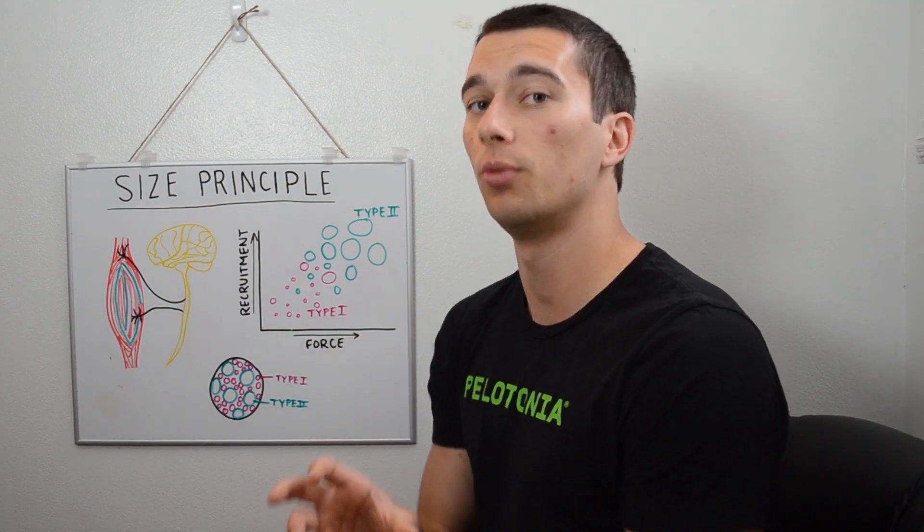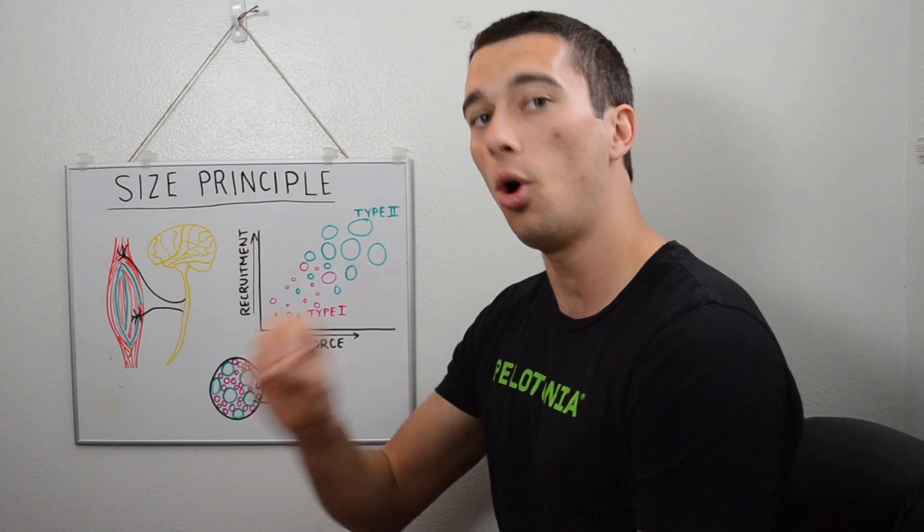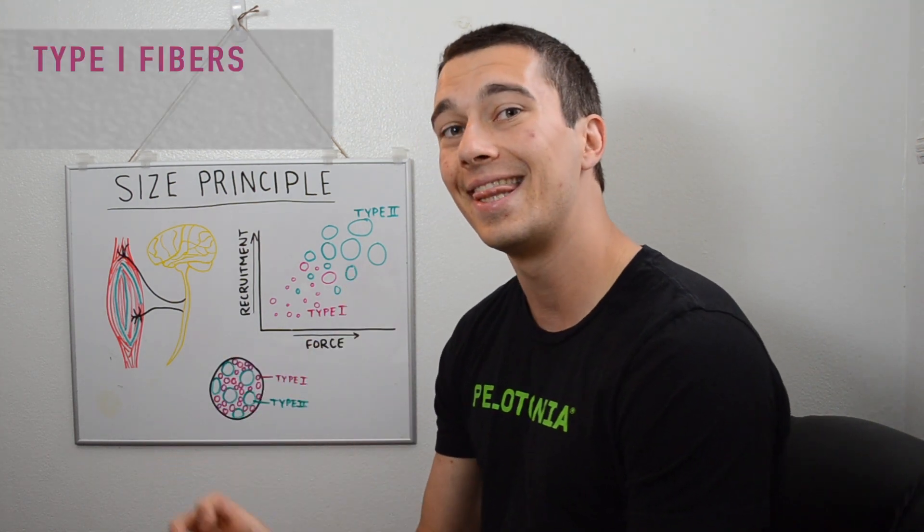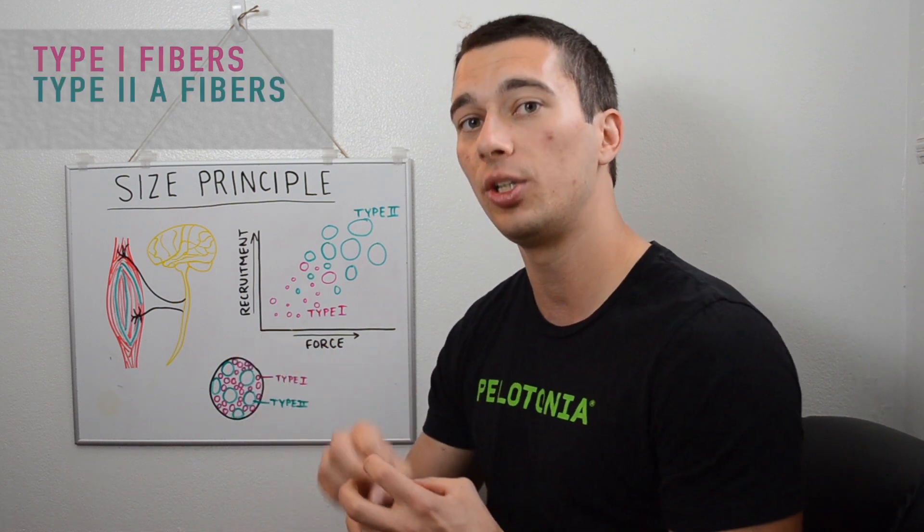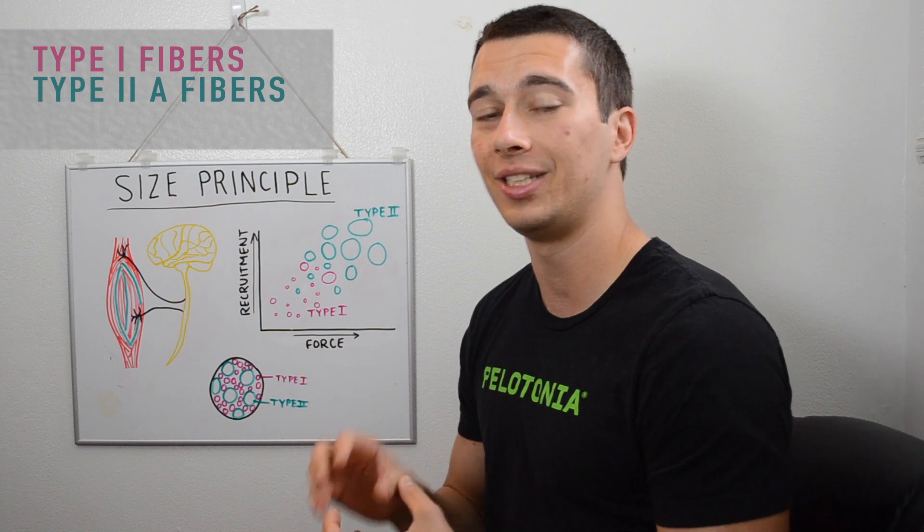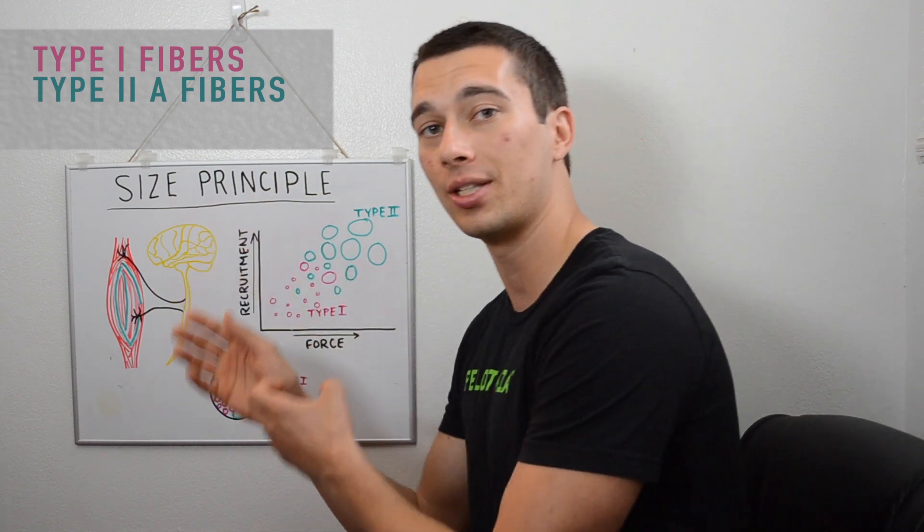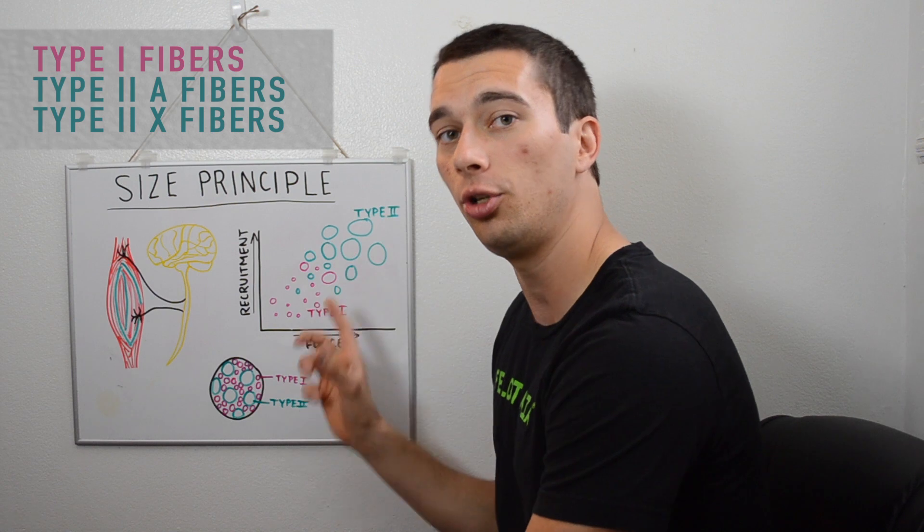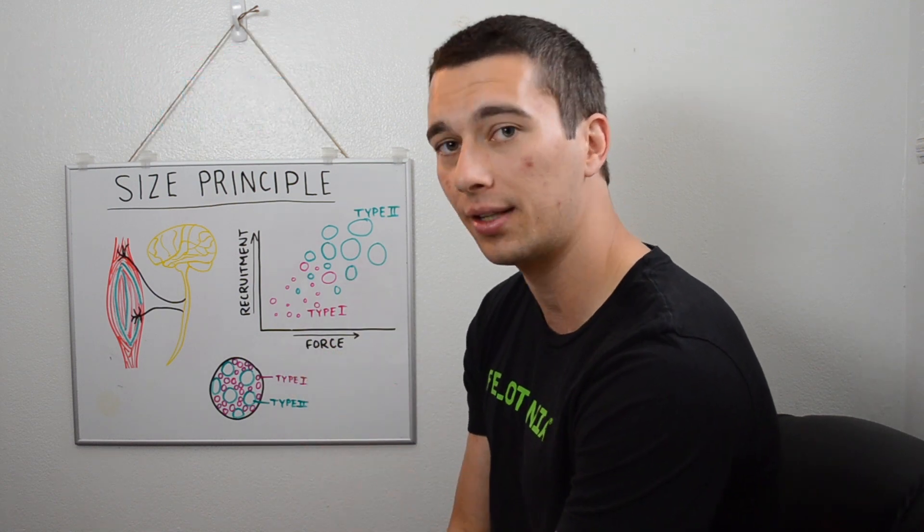Really important when we think about recruitment: we always recruit type 1s, and then if all the type 1s are recruited we go to the type 2a's. If all the type 2a's are recruited and we still need more force, then we go to our type 2x fibers. They're the hardest to recruit and they fatigue the most quickly.